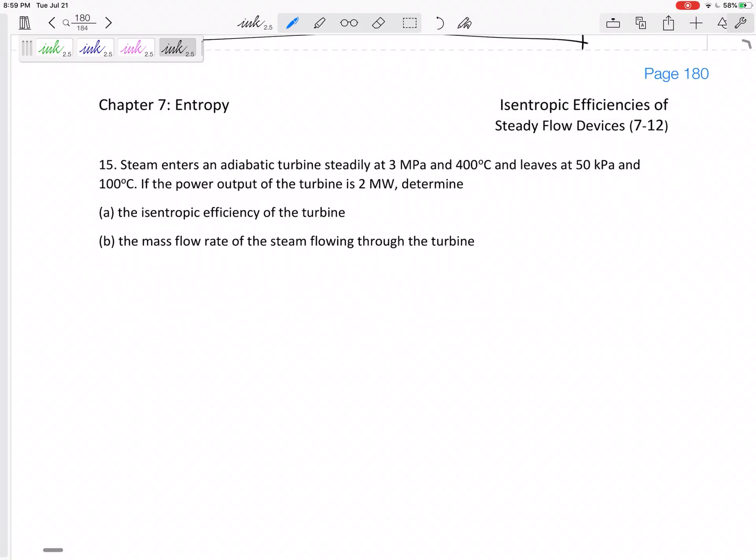All right, let's look at this problem. We've got steam entering an adiabatic turbine steadily at 3 MPa and 400 degrees Celsius. It leaves at 50 kPa and 100 degrees Celsius. If the power output of the turbine is 2 megawatts, determine the isentropic efficiency of the turbine and the mass flow rate of steam flowing through the turbine.